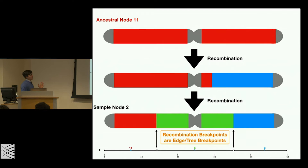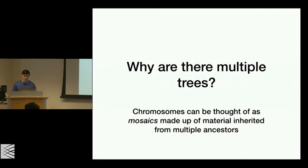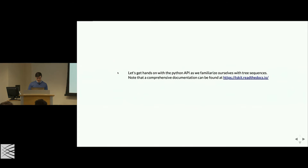That's the fundamental insight: chromosomes are mosaics. Now let's go over to the TS-Kit API and see how we actually work with these tree sequences. There's extensive documentation at TS-Kit Read the Docs, but we'll give a brief intro. Starting with the top-level tree sequence class — we import TS-Kit, load up a pre-made example that's exactly what we were just looking at.